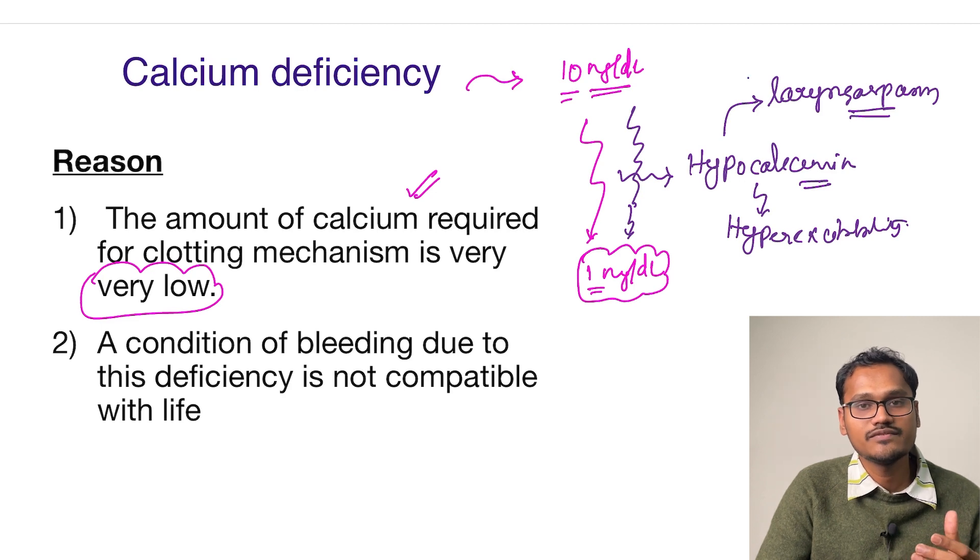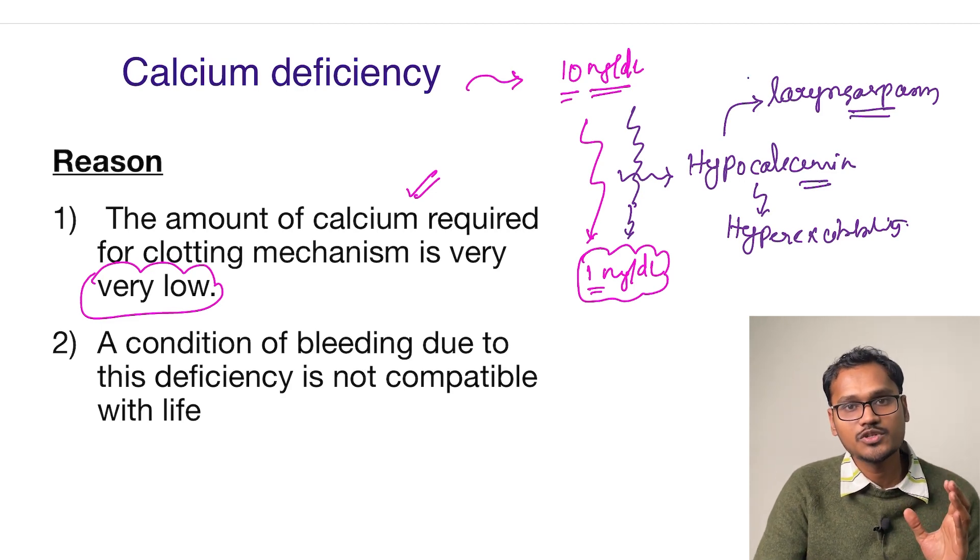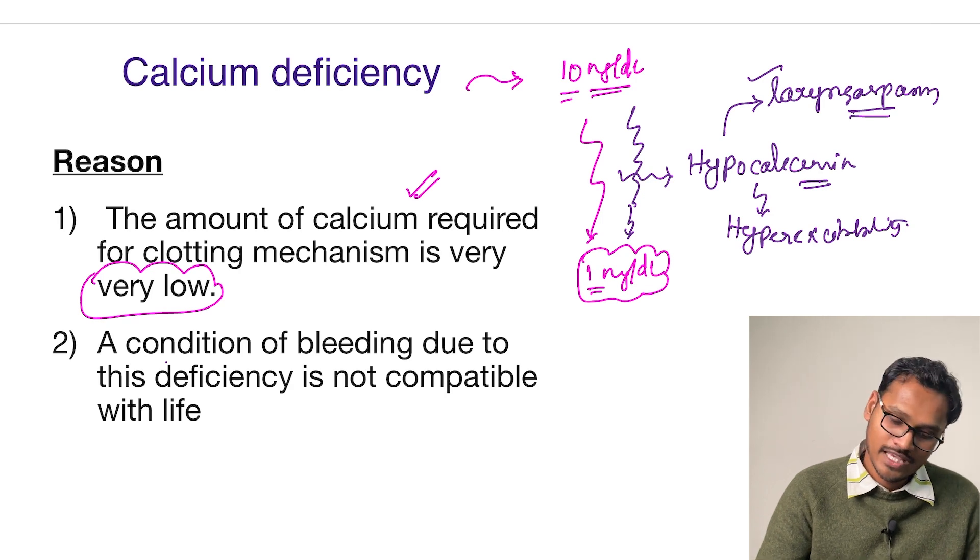spasm, the person will die. So even before clotting factor defects are produced by calcium deficiency, it can kill a person. Therefore, how will clotting factor deficiency happen in hypocalcemia? That is